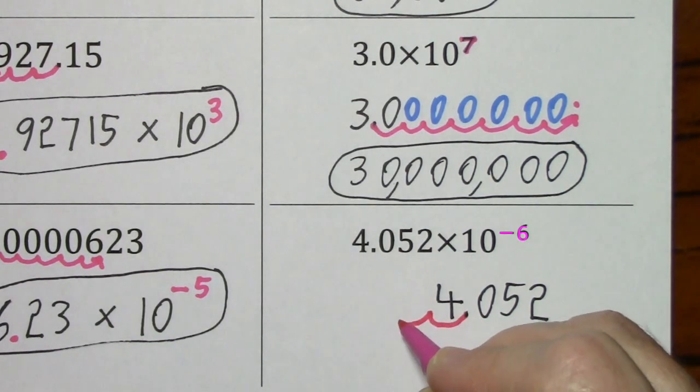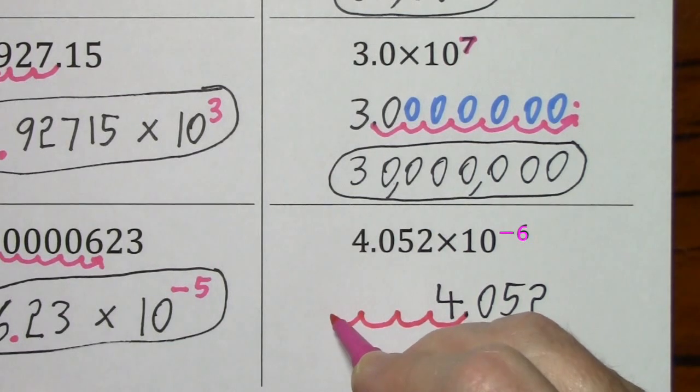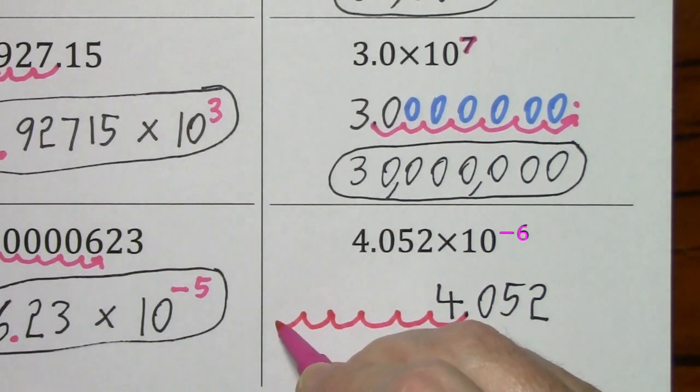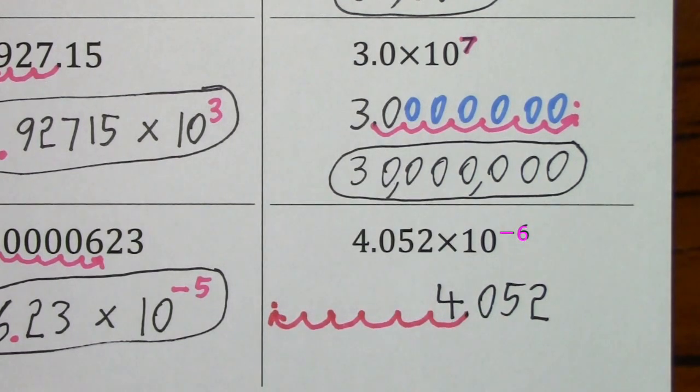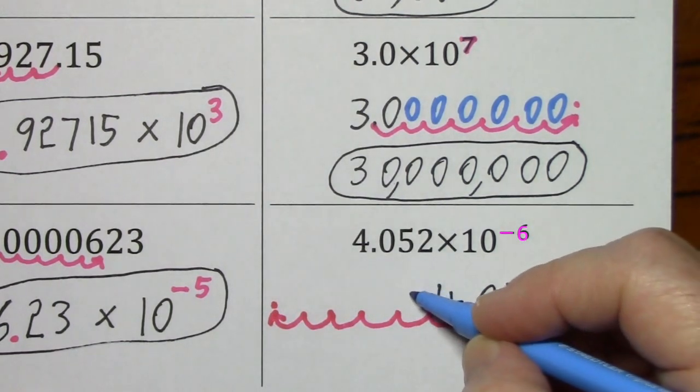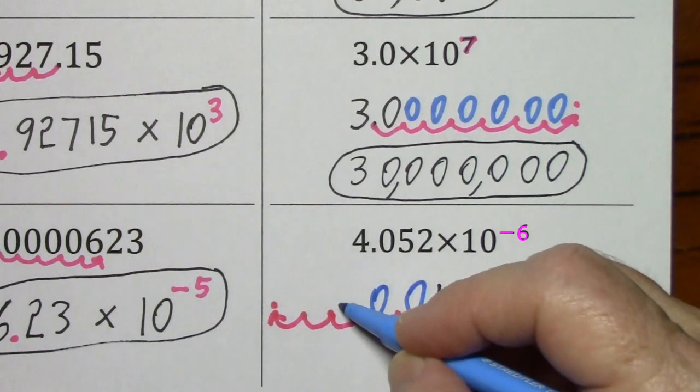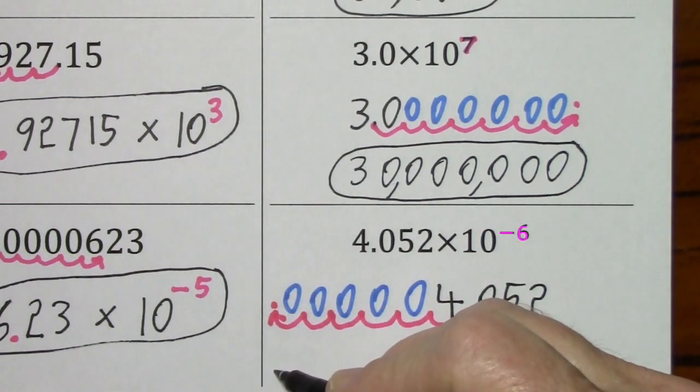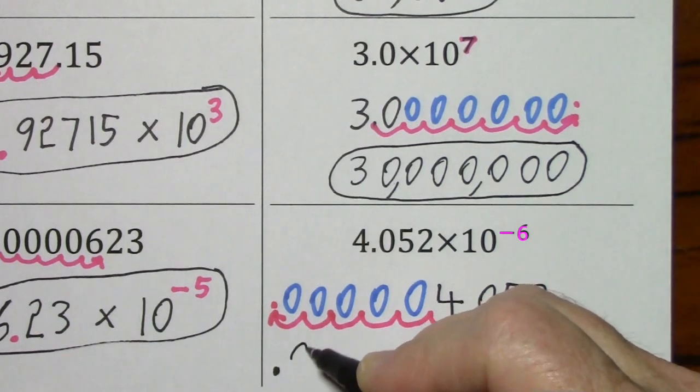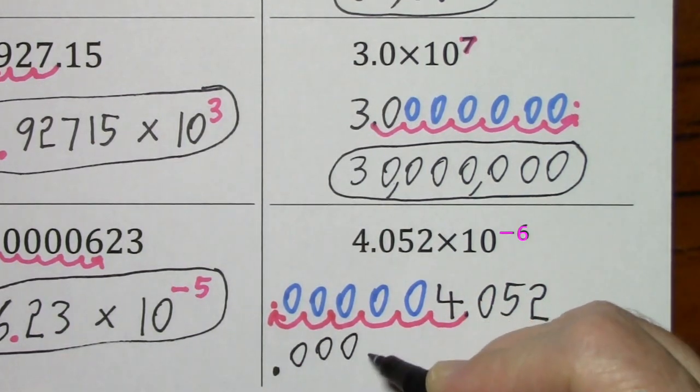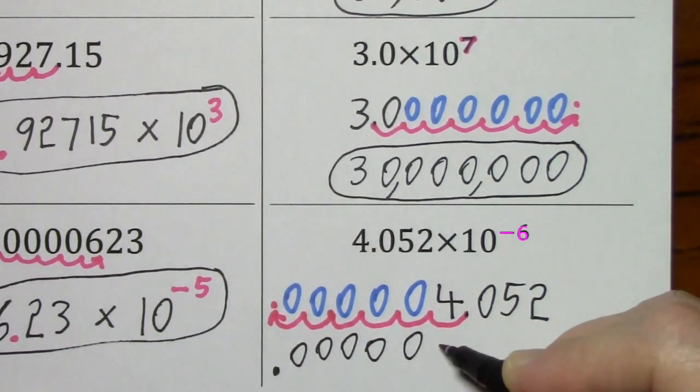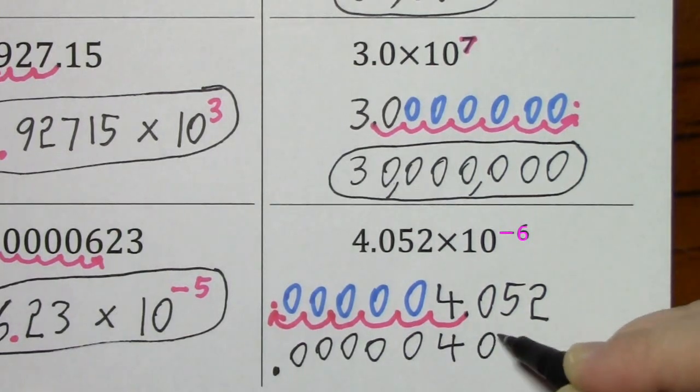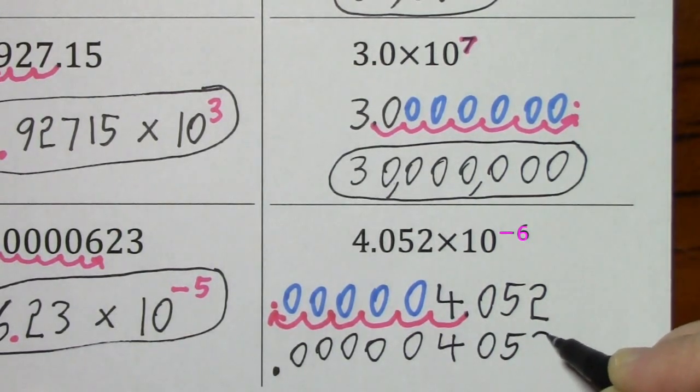One, two, three, four, five, six. I'll put the decimal right there. I'll need zeros to hold the places. So we end up with .000004052.